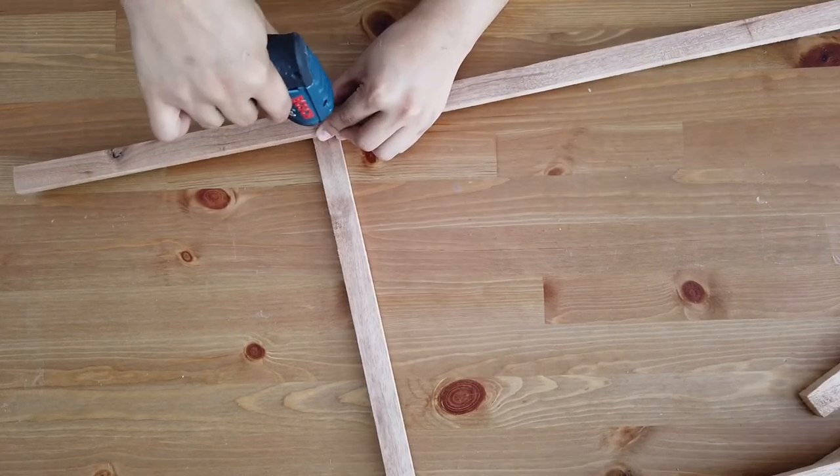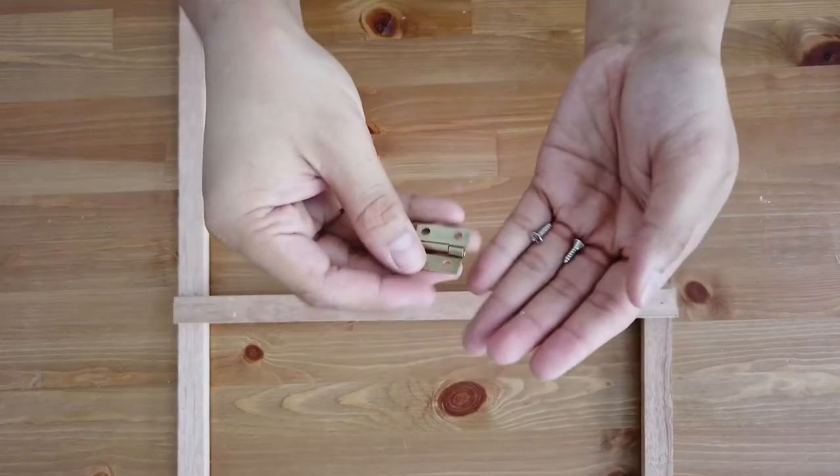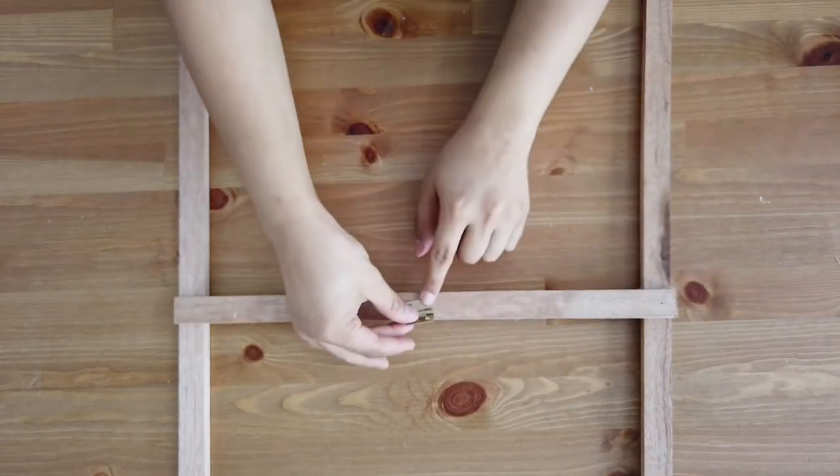So now you take the hinge and then just screw it at the shortest wooden stick.